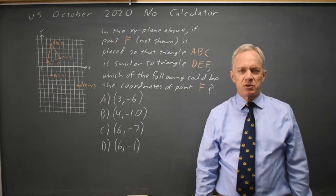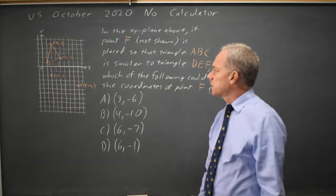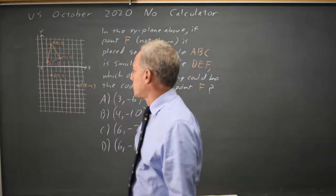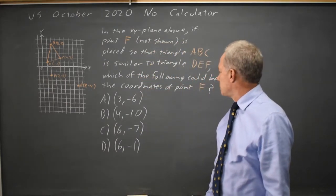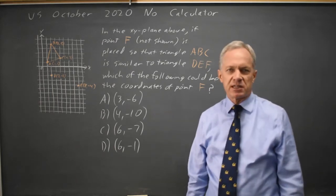I'm Dr. Roger and this question is from the October 2020 U.S. exam non-calculator section. College Board gives us a triangle and says a second triangle, which they didn't finish drawing, is similar. And they ask which of these could be the coordinates of point F on that second triangle.